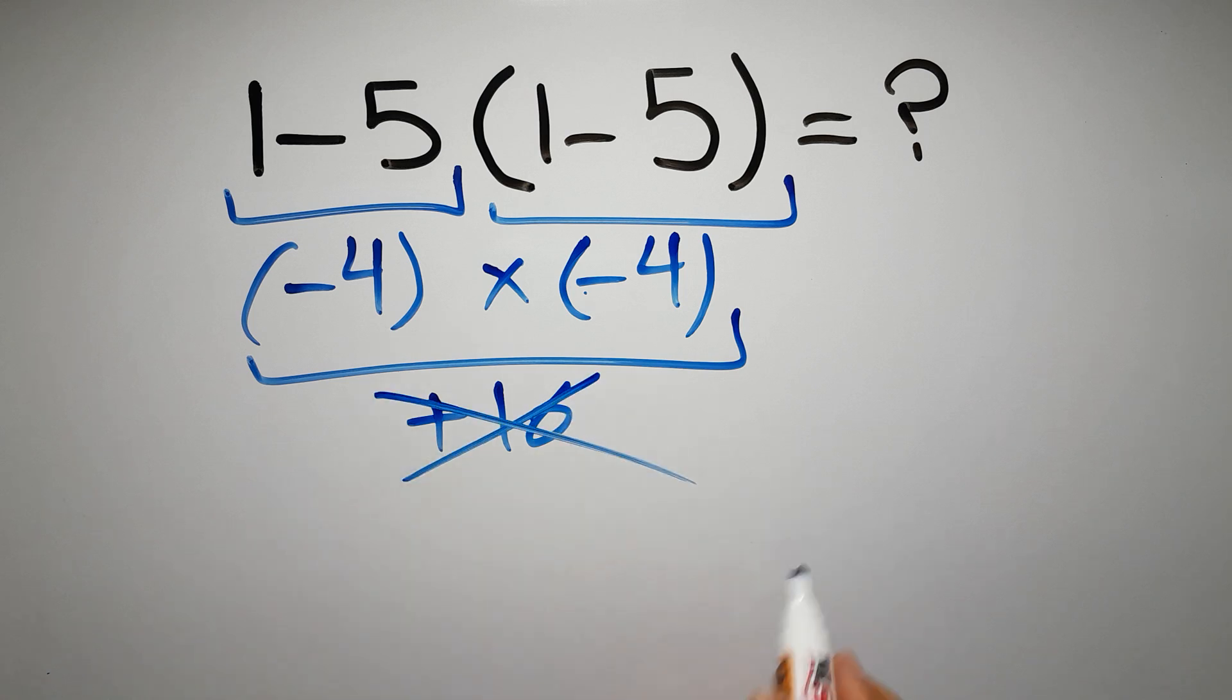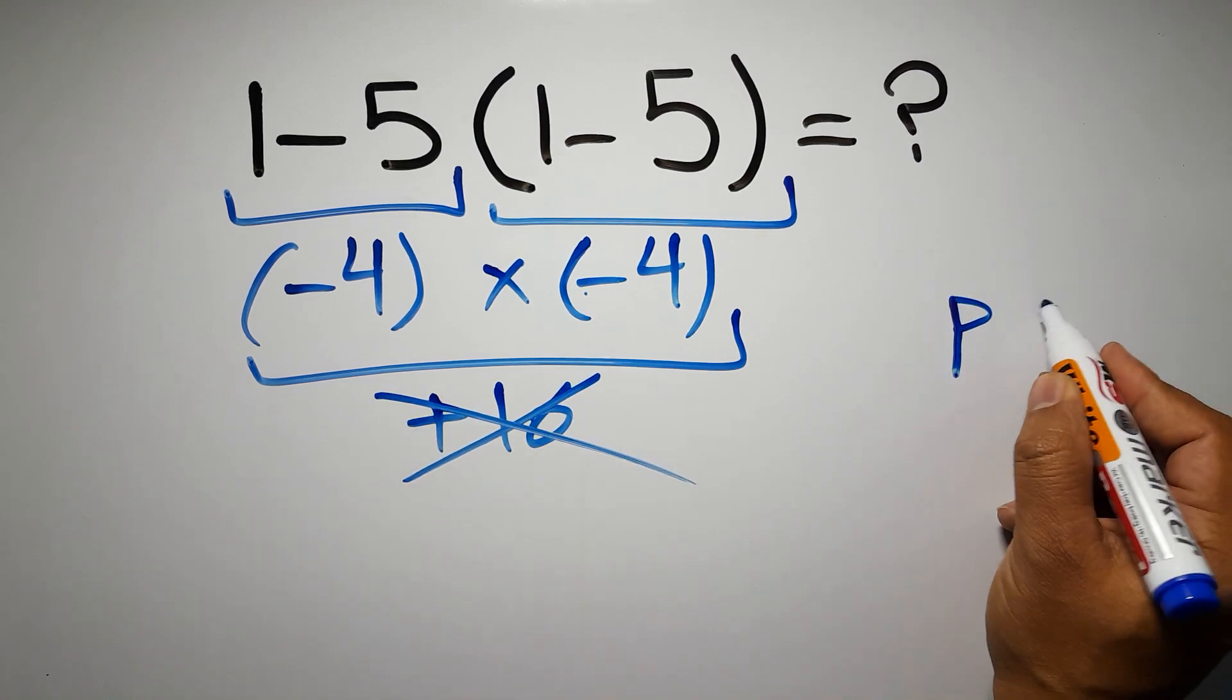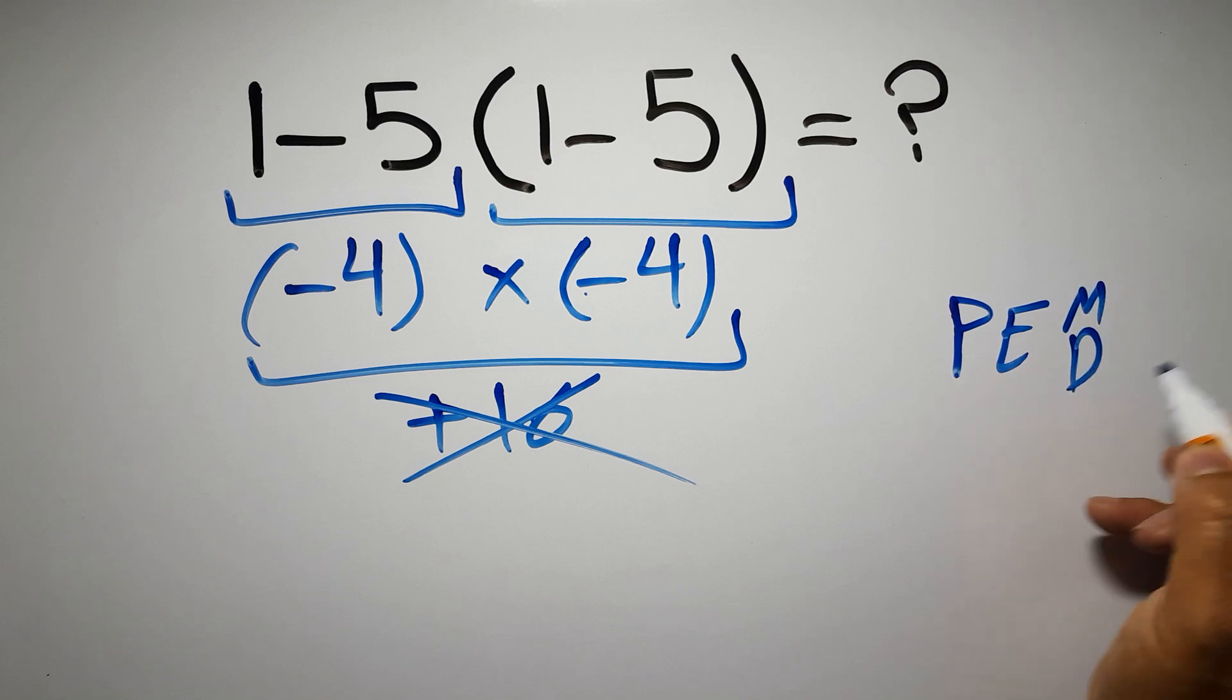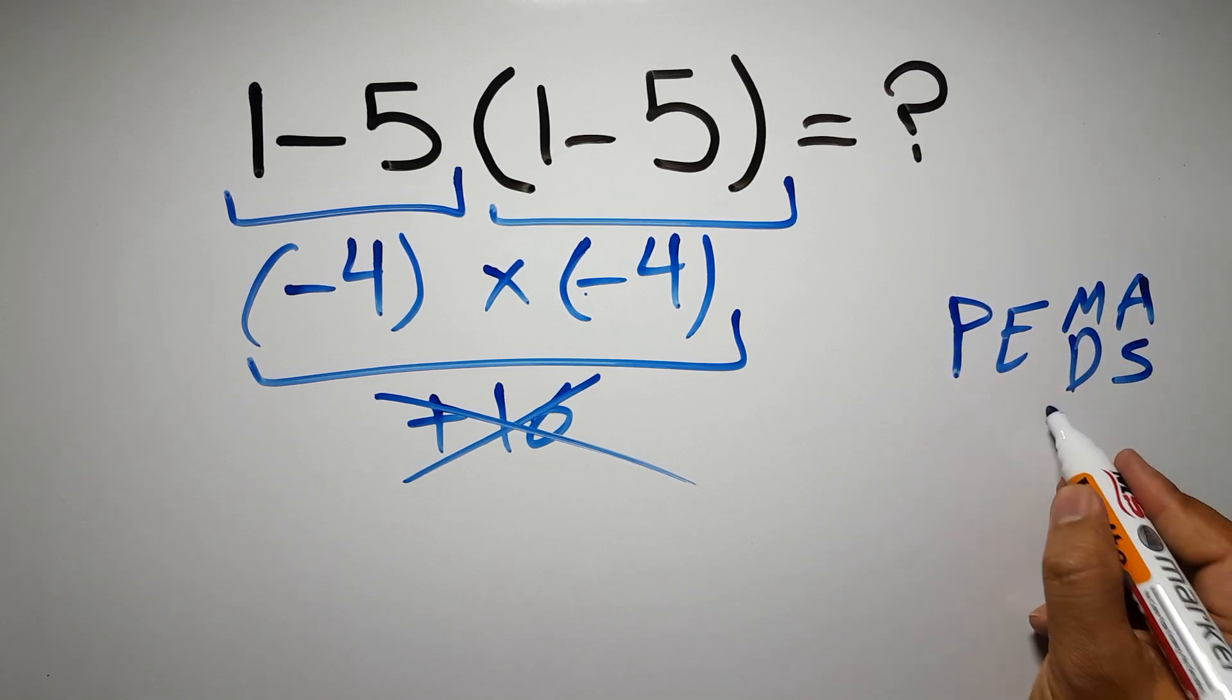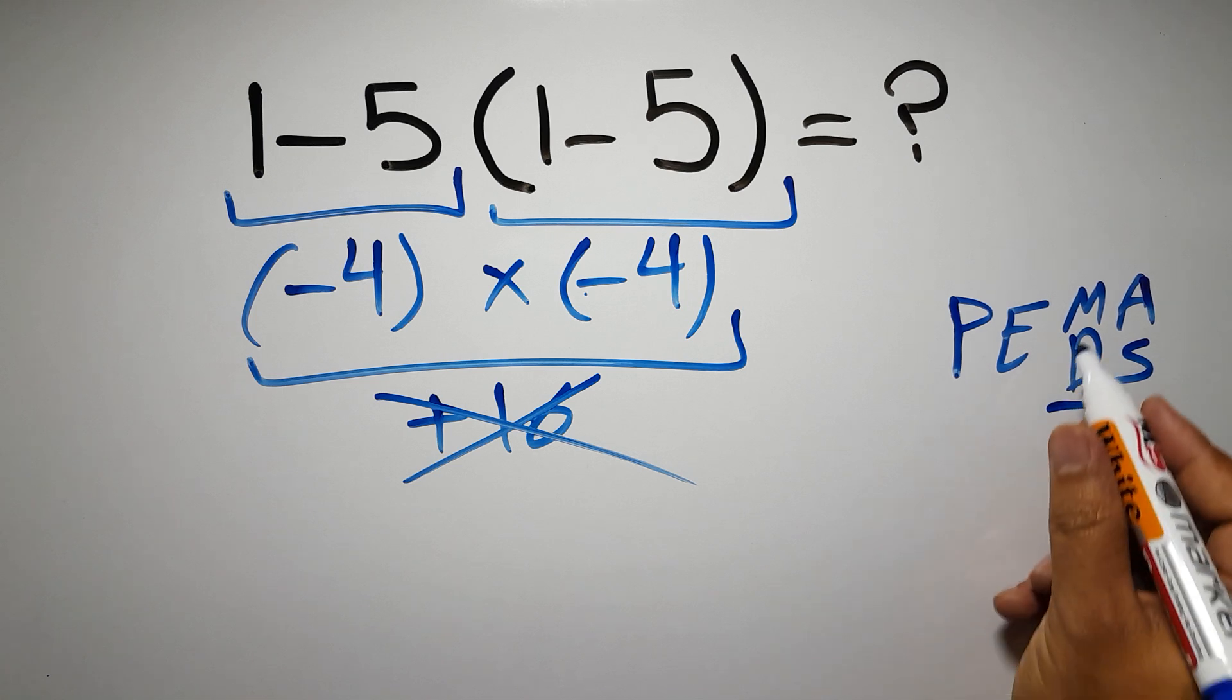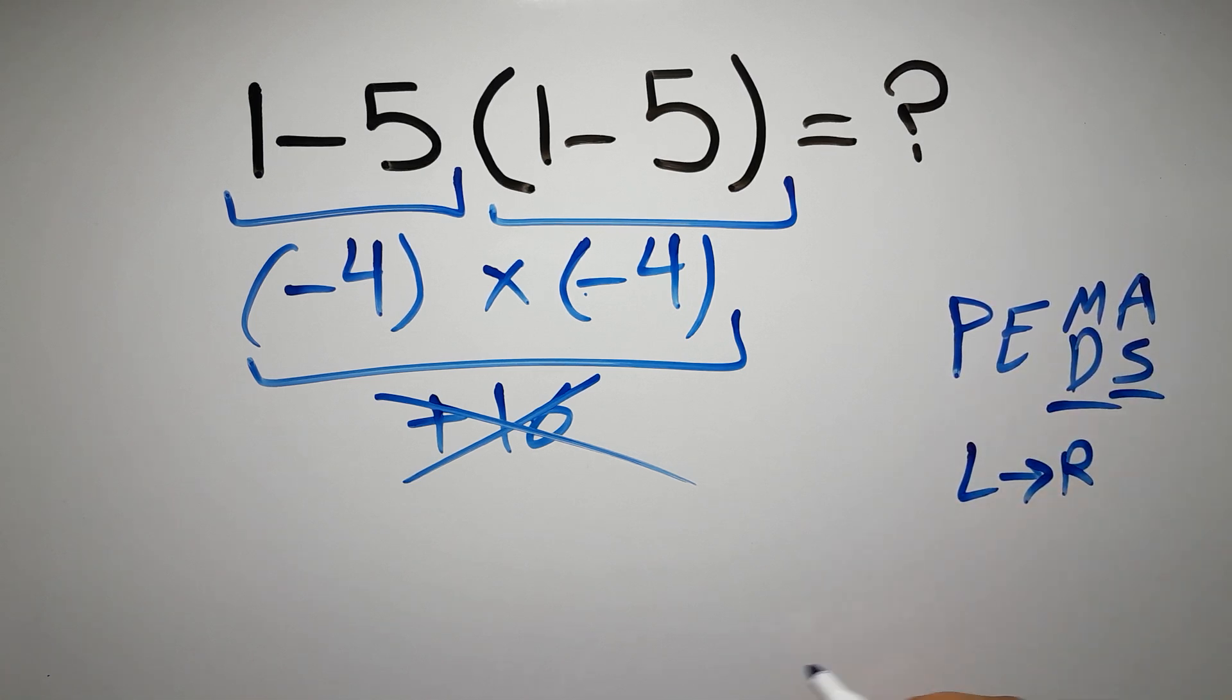But this answer is not correct, because according to the order of operations, first we have to do parentheses, then exponents, then multiplication or division, and finally addition or subtraction. Remember that multiplication and division have equal priority, and we have to work from left to right. And the same applies to addition and subtraction.